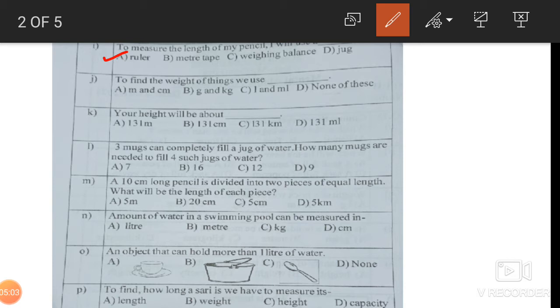Next, to find the weight of things. If we have to take the weight of something, which unit will we use? Gram and kilogram. Next, your height will be about - of course it's going to be in centimeter. So it will be 131 centimeter.